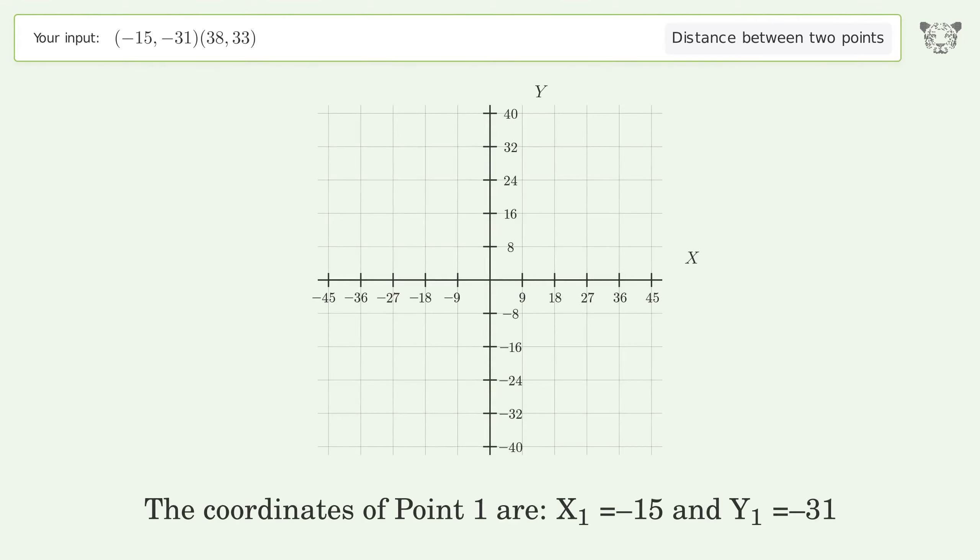The coordinates of point 1 are x1 equals negative 15 and y1 equals negative 31. The coordinates of point 2 are x2 equals 38 and y2 equals 33. d is the distance between the two points.